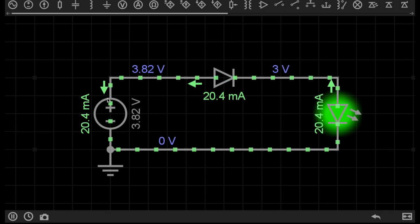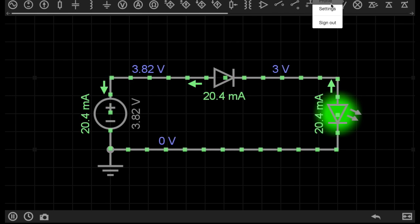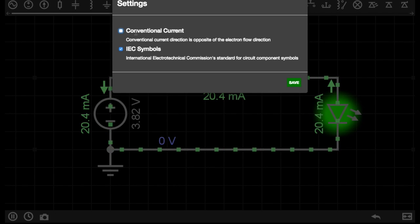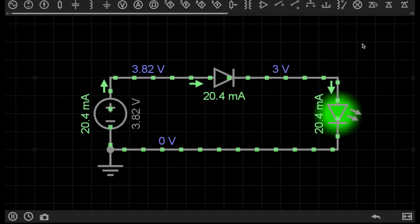However, very early on in the discovery of electricity, it was actually thought that electrons moved through a circuit in the opposite direction, from positive to negative.